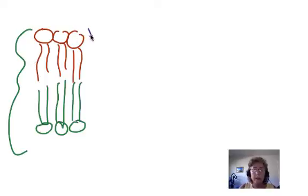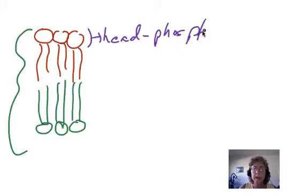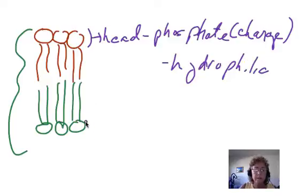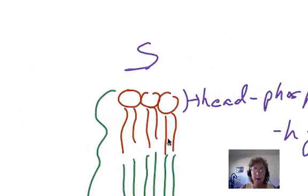The head portion here is made up of the phosphate group. And the phosphate group is charged and can intermingle with water. Thus, it is considered to be hydrophilic. And you notice that the phosphate group is going to face the inside of the environment as well as the outside of the environment.